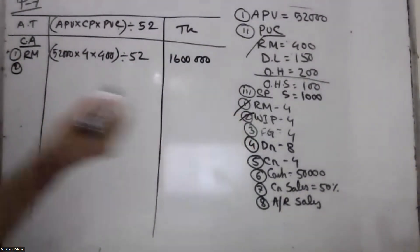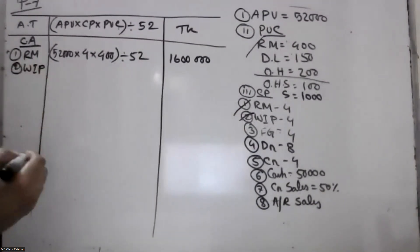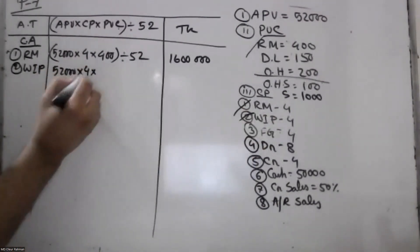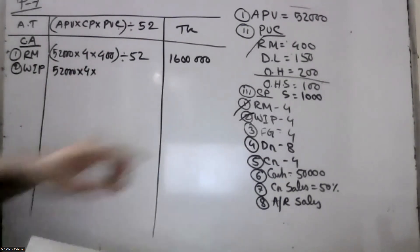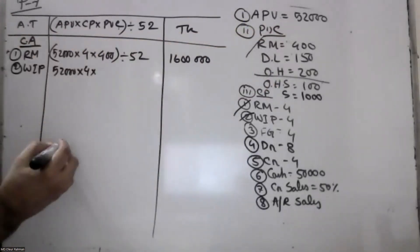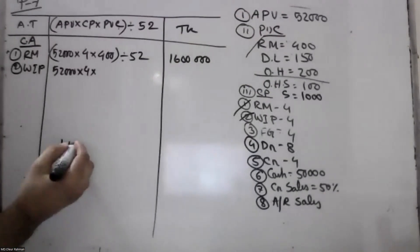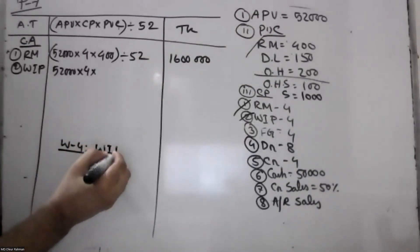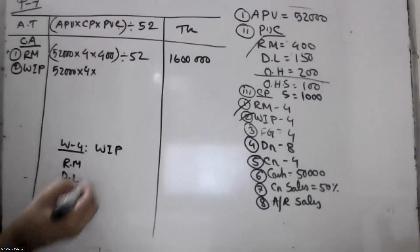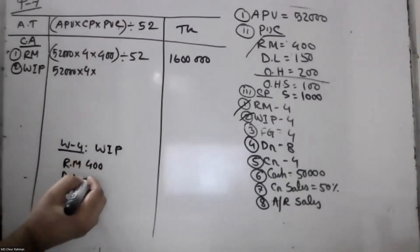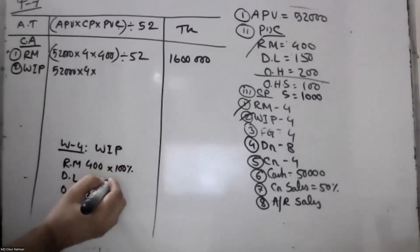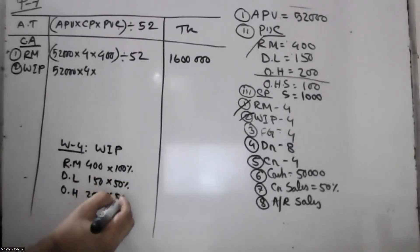Number 2 item is WIP — work in process. Work in process: raw material 400, direct labor 300, overhead 200. Completion percentages: raw material 100%, direct labor 25%, overhead 55%.